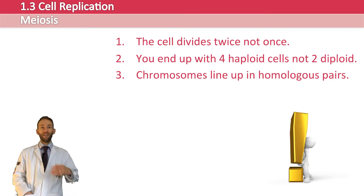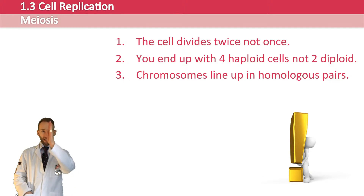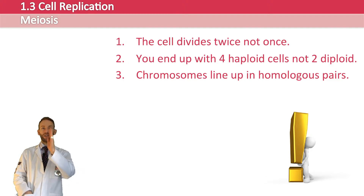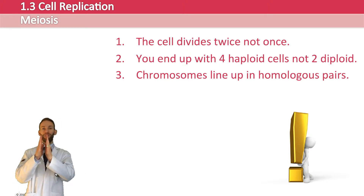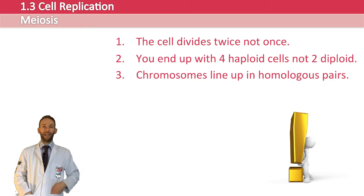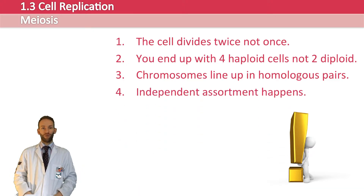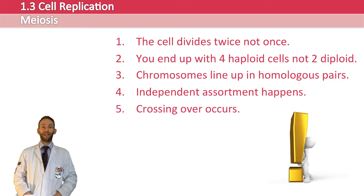In mitosis, chromosomes line up in one long line during metaphase. A big difference in meiosis is that the chromosomes don't all line up in one long line, but they line up in two lines — in what we call homologous pairs, which we'll talk about more later. Something called independent assortment happens, which is really important, along with something else called crossing over. We'll be talking about these later on in the video.